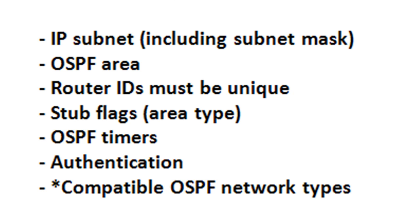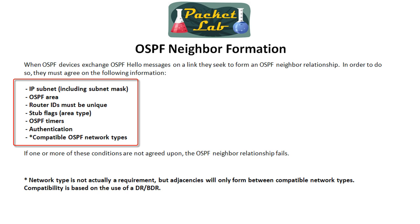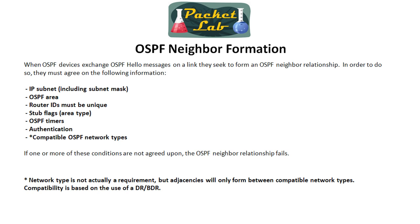Authentication and compatible OSPF types are covered in a different lesson. Technically, network type does not have to be agreed upon — there's a whole other lesson on how that works. The key takeaway is that these values have to match: if the hello interval and router dead interval do not match, you will never get a neighbor relationship. Without a neighbor relationship you won't get an adjacency, and without an adjacency your OSPF routing process is going to be broken.